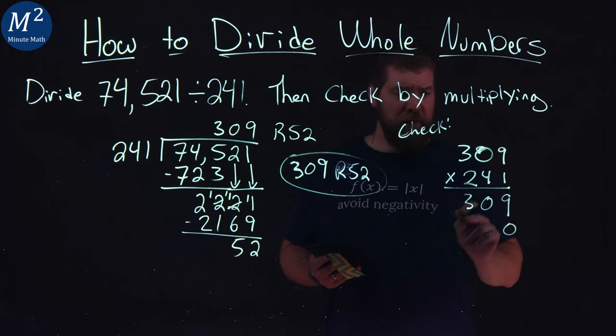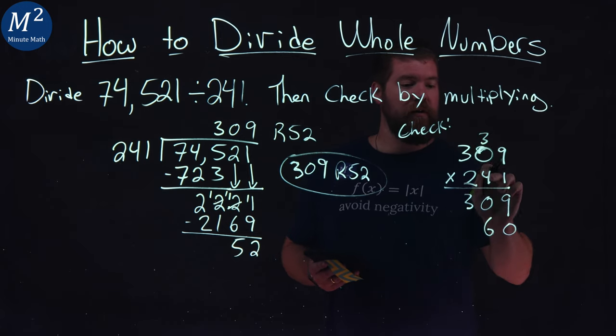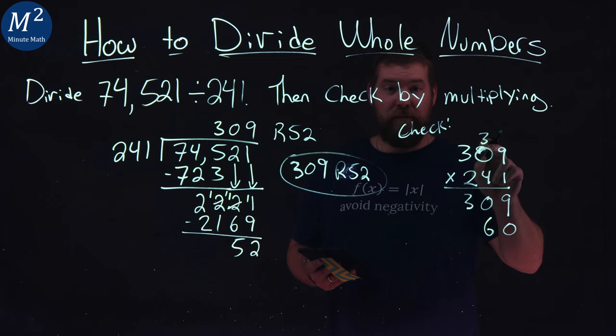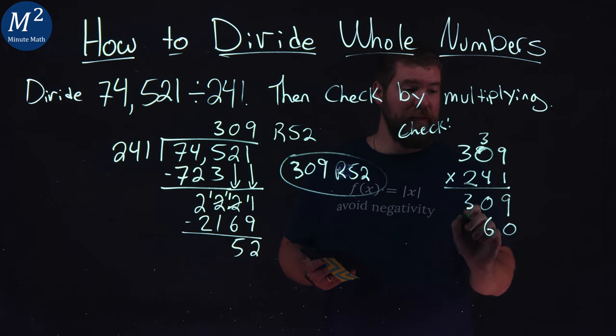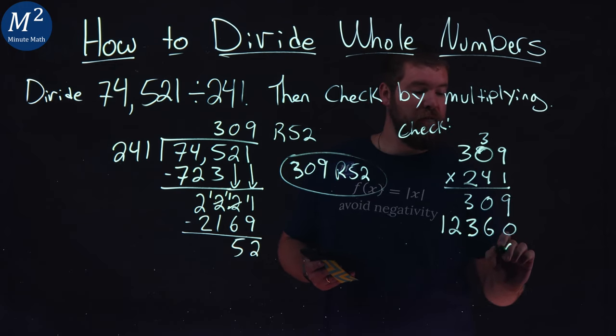0 for my place value. 4 times 9 is 36. So, we have a 6 here. Carry the 3. 4 times 0 is 0 plus 3 is 3. Put a 3 right there. And 4 times 3 is 12. Two place values here.